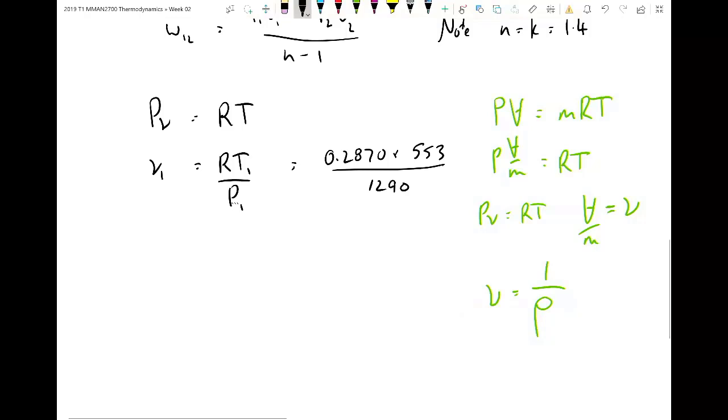Good. And someone with a calculator has already calculated my V1 value. I calculated it before I came. Is it okay if I write it out? I'll write it out and then you can tell me if you disagree. 1, 2, 3, 0, 6, 5 metres cubed per kilogram.